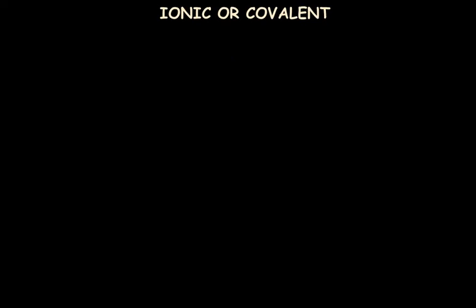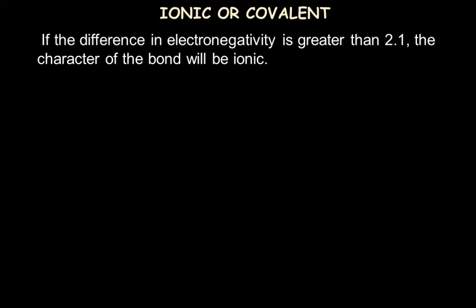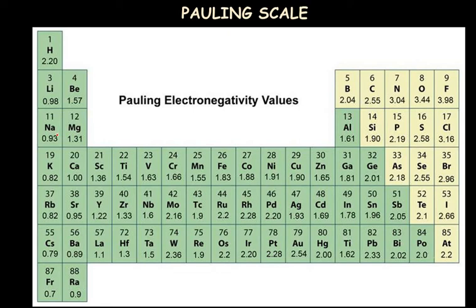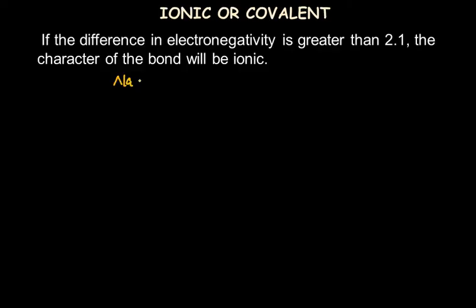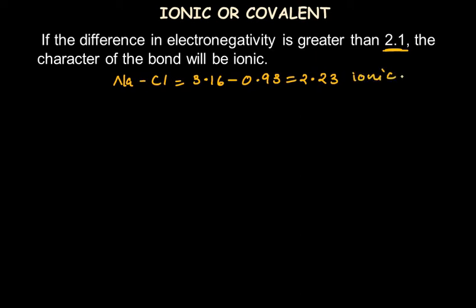Based on the difference in electronegativity of two atoms, we can determine whether a compound is ionic or covalent. If the electronegativity difference between two covalently bonded atoms is greater than 2.1, the bond character is ionic. For example, sodium has an electronegativity of 0.93 and chlorine 3.16. The difference is 3.16 minus 0.93, which equals 2.23 — greater than 2.1 — so sodium chloride is an ionic compound.